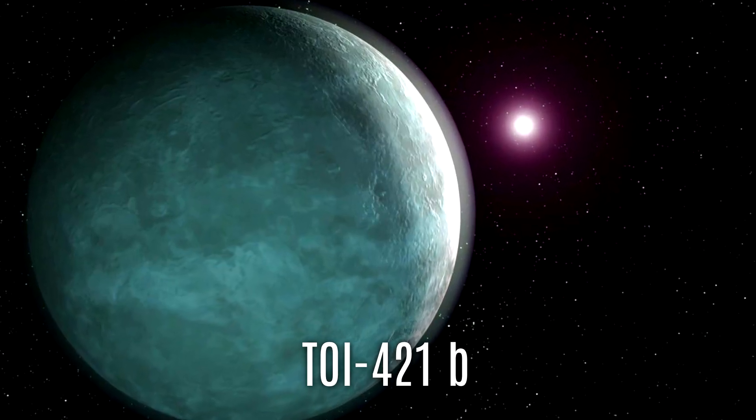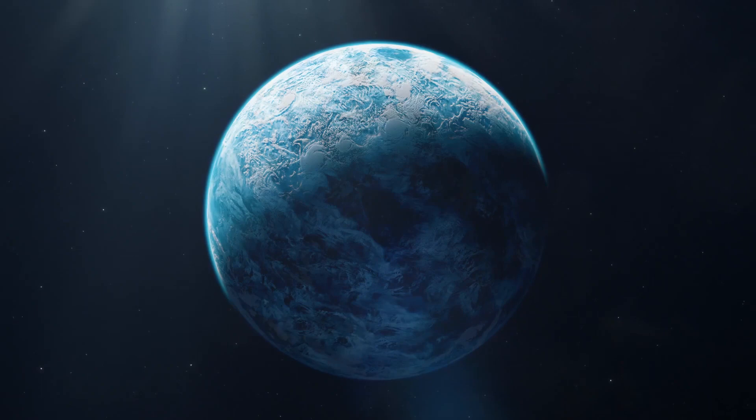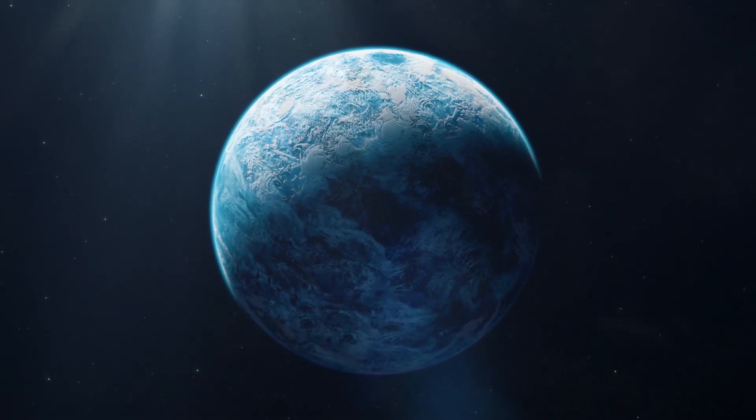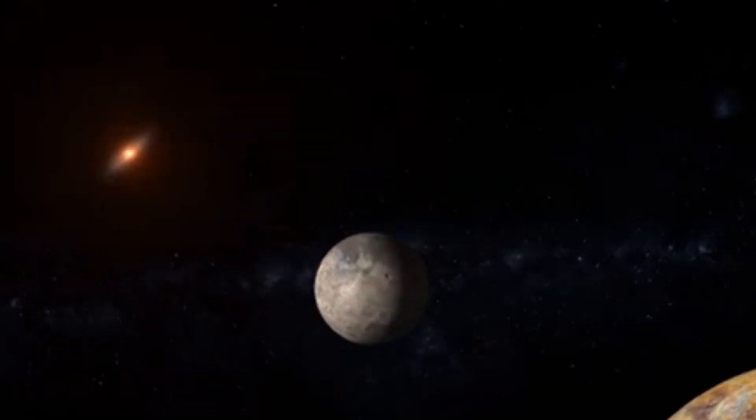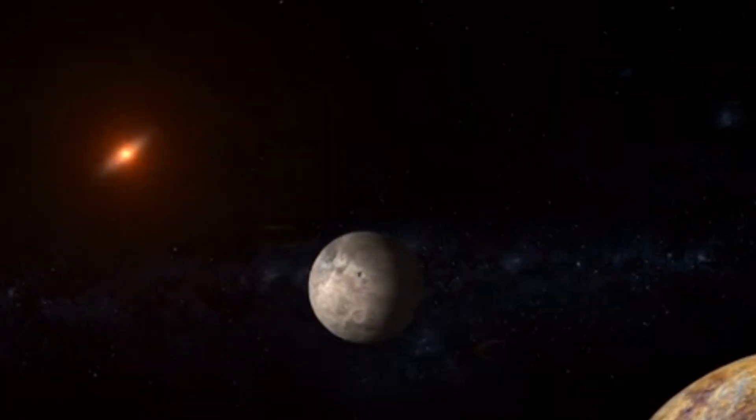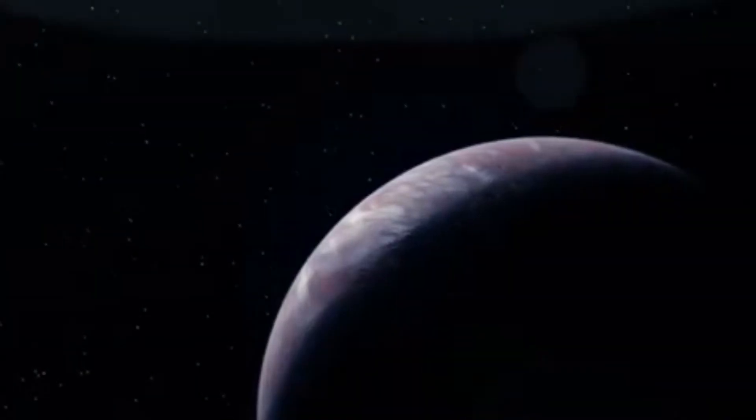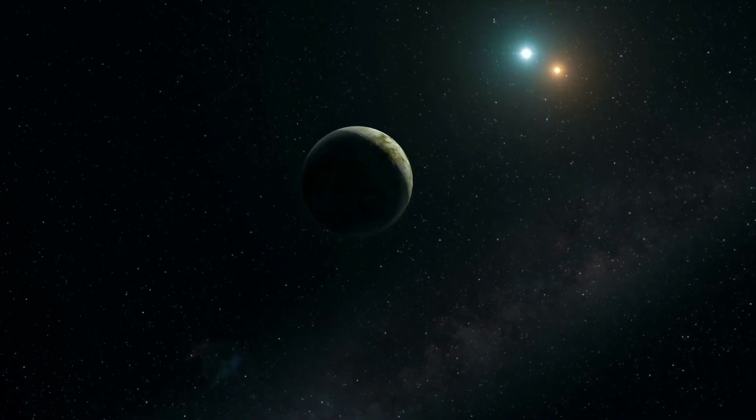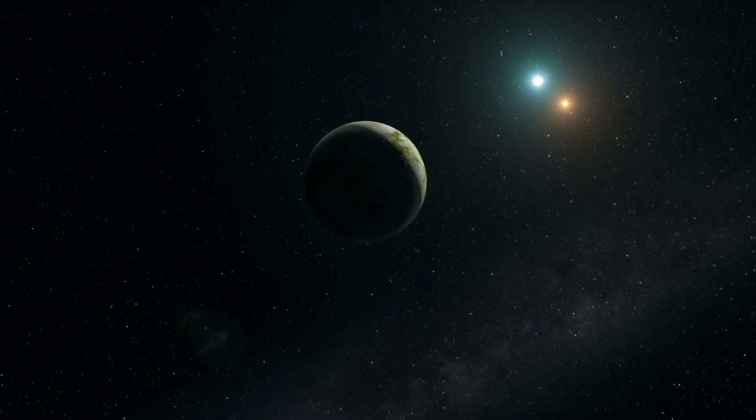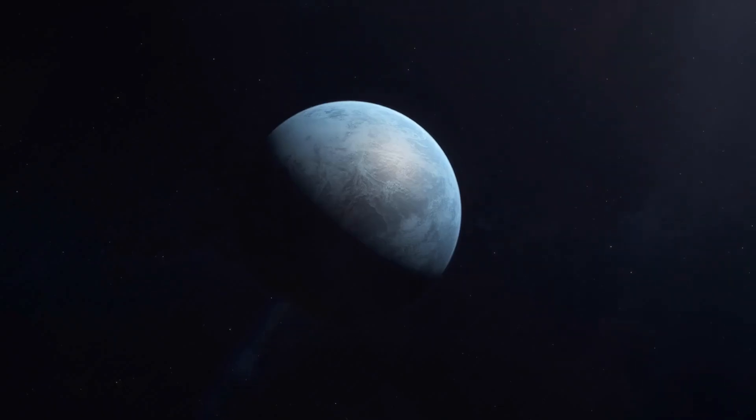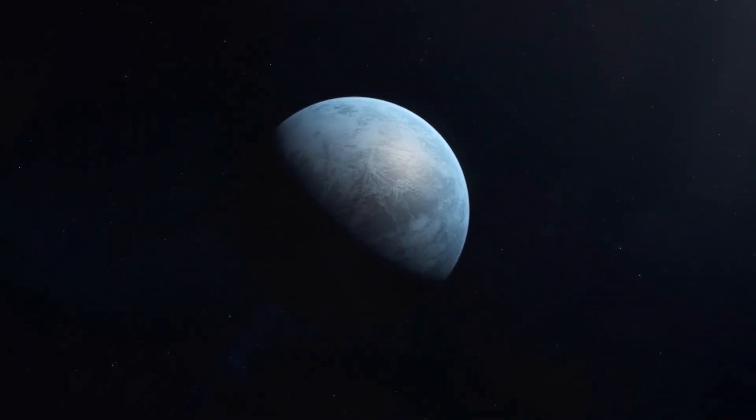And that single discovery is opening the door to new questions, and even bigger possibilities. This planet is known as TOI 421b. It's what scientists call a sub-Neptune. A kind of planet that doesn't exist in our own solar system, somewhere in size between Earth and Neptune. Too big to be rocky, too small to be a gas giant. Sub-Neptunes are strange. Mysterious.